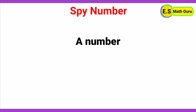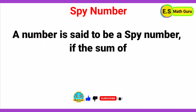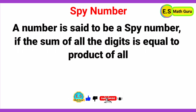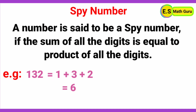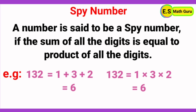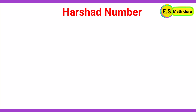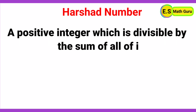Next, spy number. A number is said to be a spy number if the sum of all the digits is equal to the product of all the digits. For example, 132: the sum of its digits is 1 + 3 + 2 = 6, and the product of the digits is 1 × 3 × 2 = 6. Since the sum and the product of the digits are equal, 132 is a spy number.